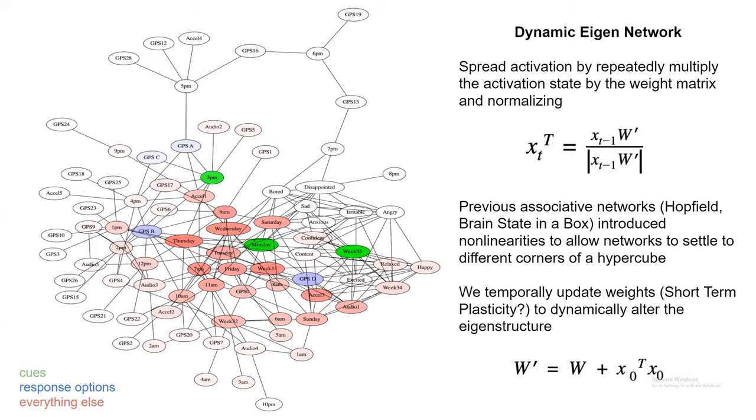The most natural way to think about propagating activation through a network like this is to start with the cue, which we call X_0, multiply by the weight matrix, normalize, and repeat until you're no longer changing. If you do that procedure, called the power iteration, it's known that you will find the primary eigenvector of the matrix, regardless of what cues you put in. That's not very useful from a memory perspective, because obviously different cues, we'd like to come up with different responses. That's been known for a long time, and Hopfield and Anderson developed various models that introduce nonlinearities to allow for different stable states.